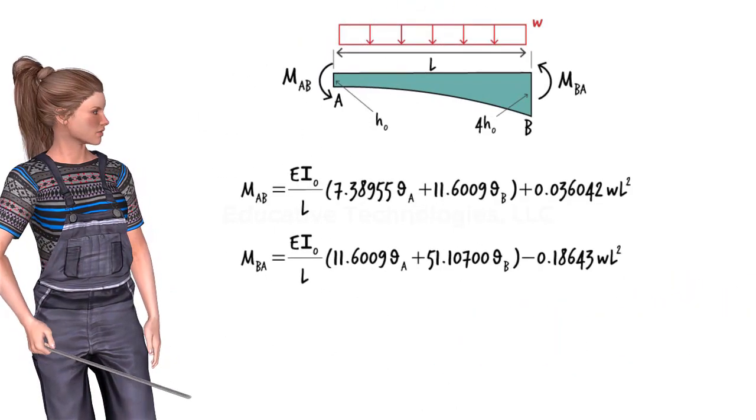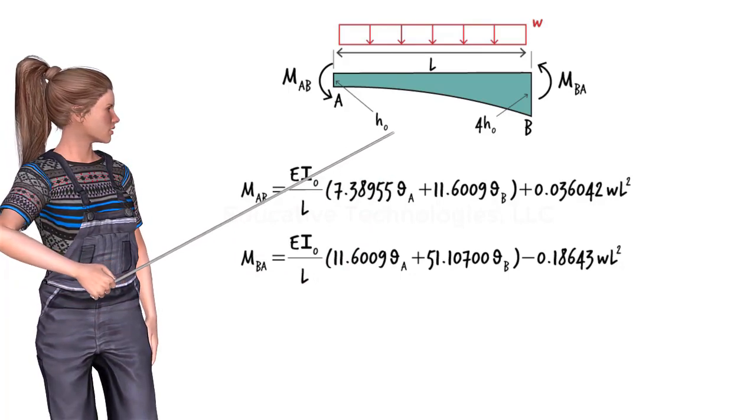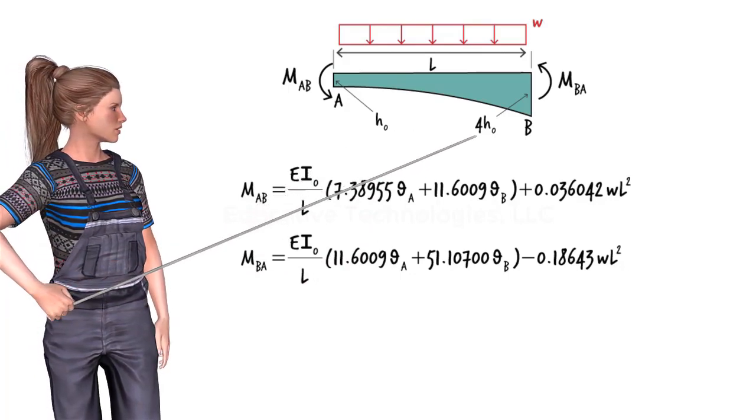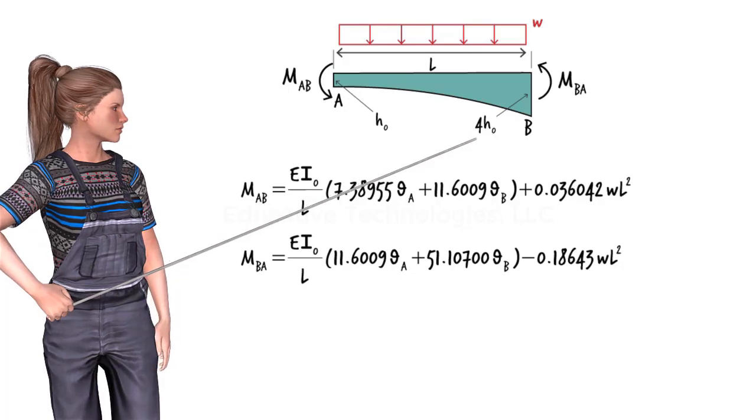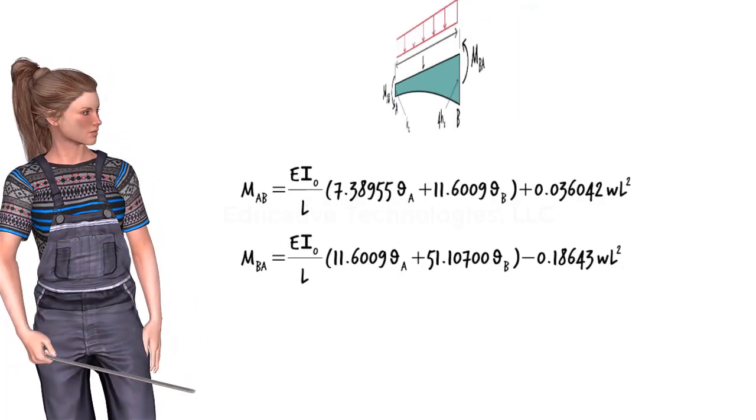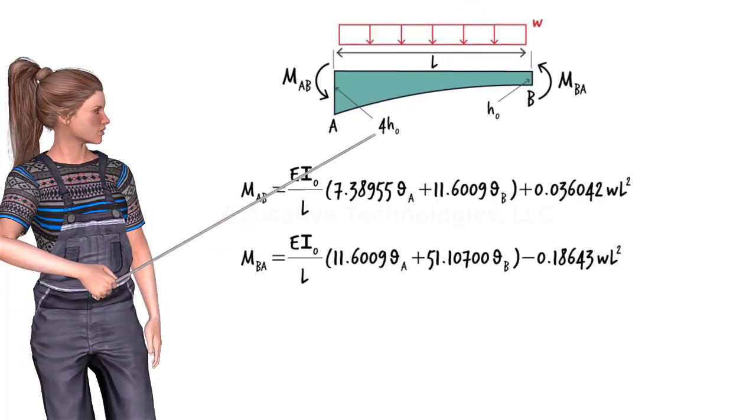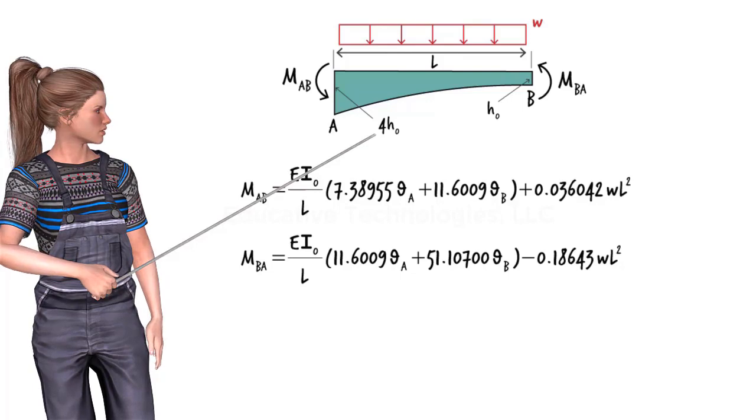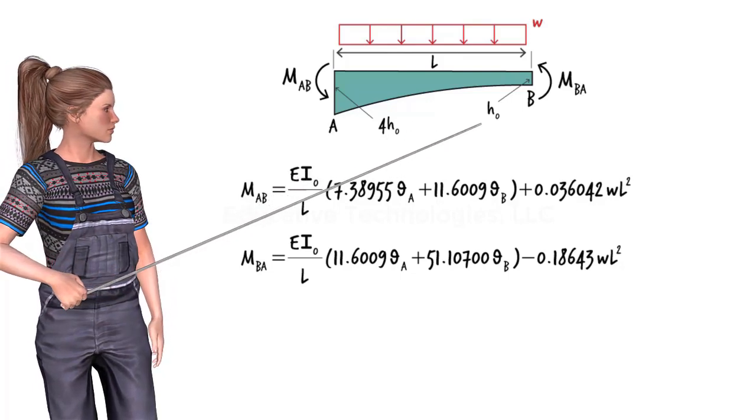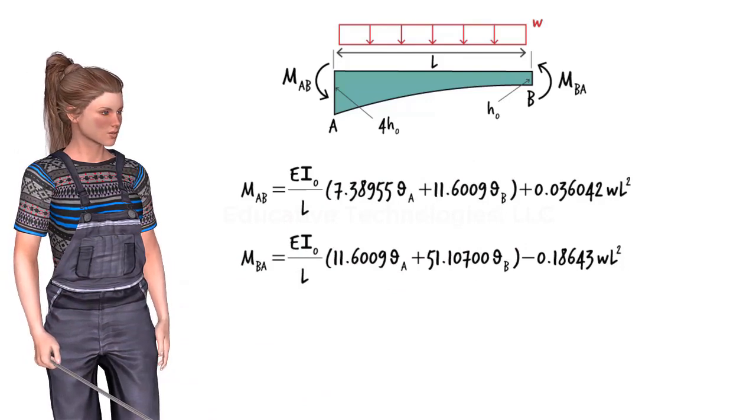These equations are valid for the case in which H0 is located at the left end and 4H0 is at the right end of the beam. But what if the beam segment has been flipped? Now, 4H0 represents the beam's height at the left end of the segment, and H0 is the height at the right end. Then what would the slope-deflection equations look like for this configuration?